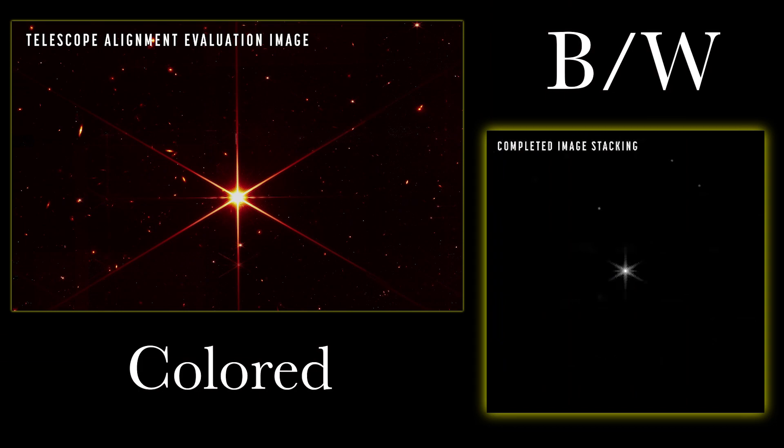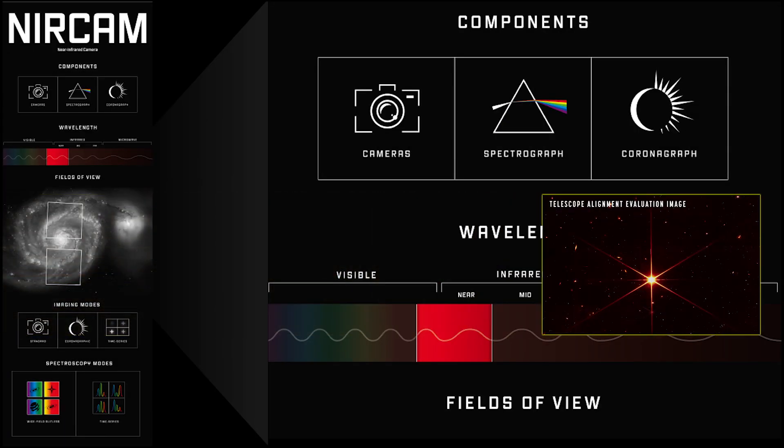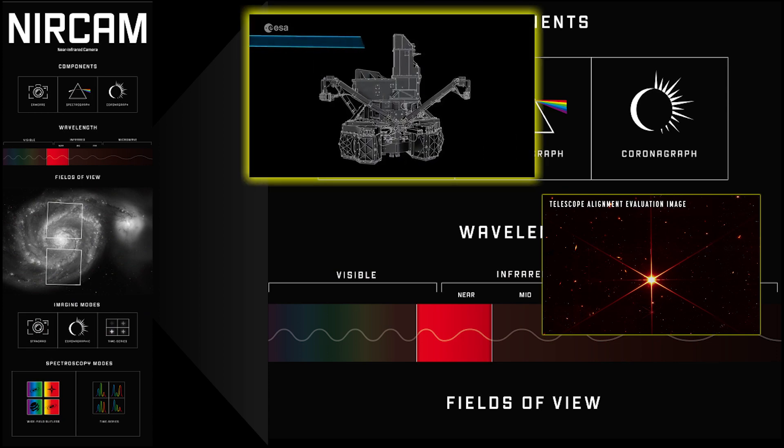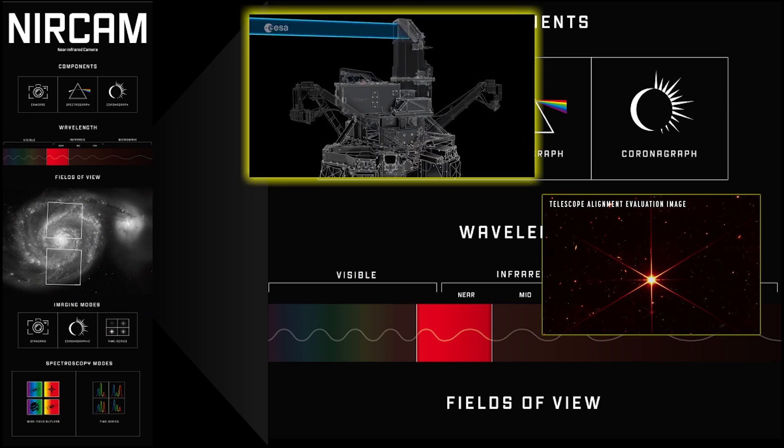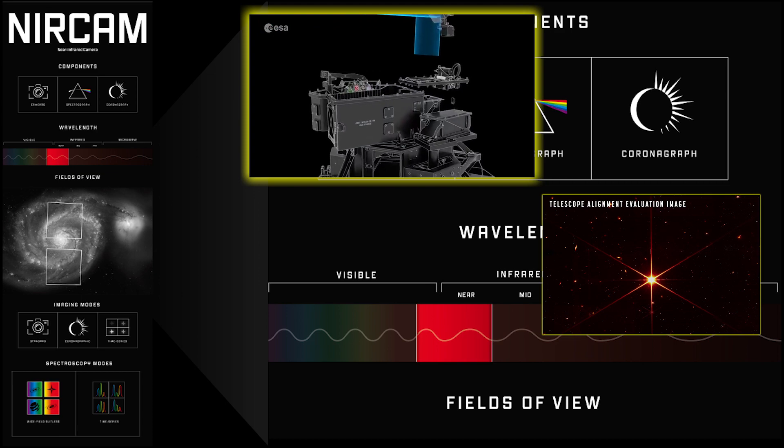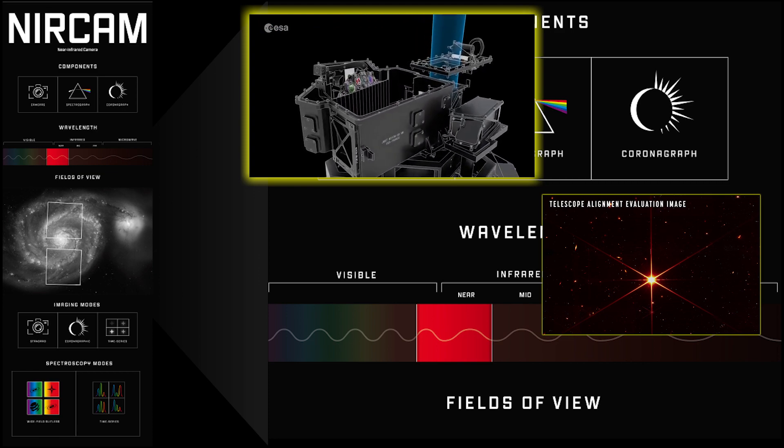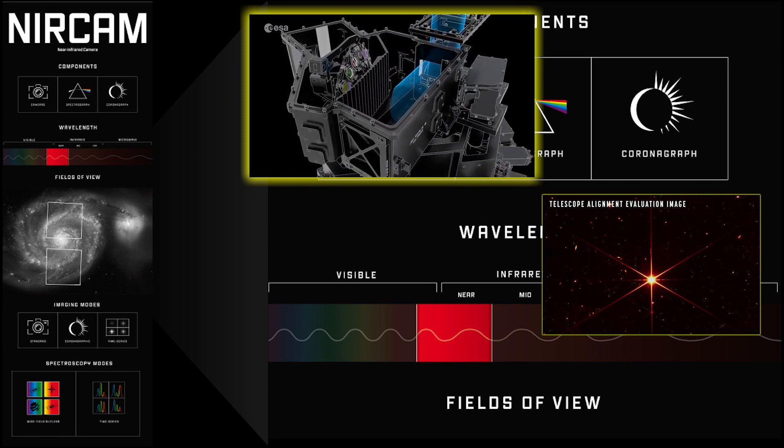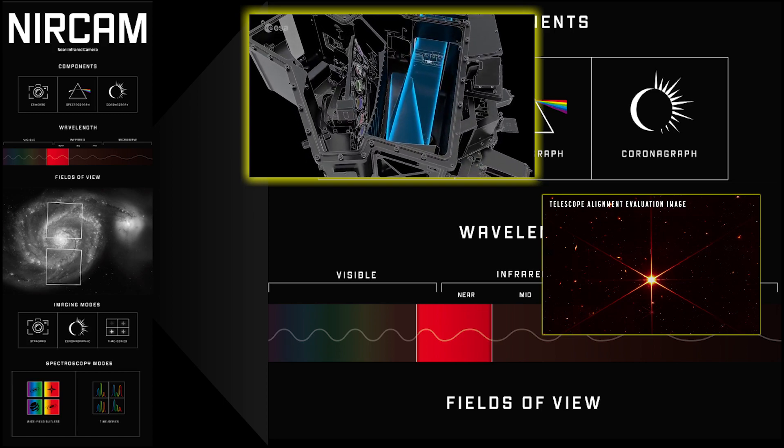Secondly, you may also find interest in the fact that Webb actually records light in black and white, just the same way the Hubble telescope does. In this image we are able to see the different colors thanks to the use of filters, which allow specific colors of light to pass through. These filtered images are then individually colored by scientists and image processors and then combined.